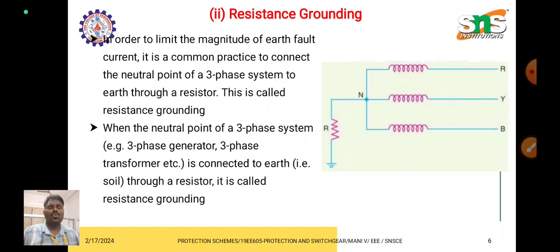In resistance grounding, the neutral of the three-phase system is connected to the ground through some amount of resistance. The resistance is used to limit the fault current supplied to the ground, and we can vary the resistance value according to the fault current level.